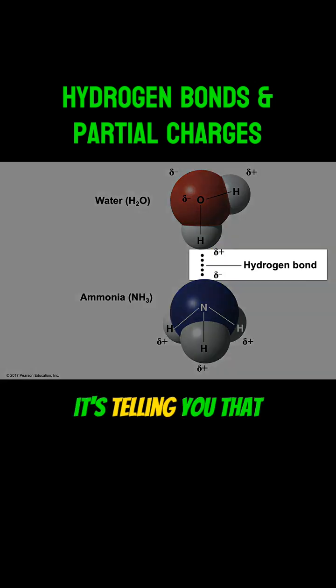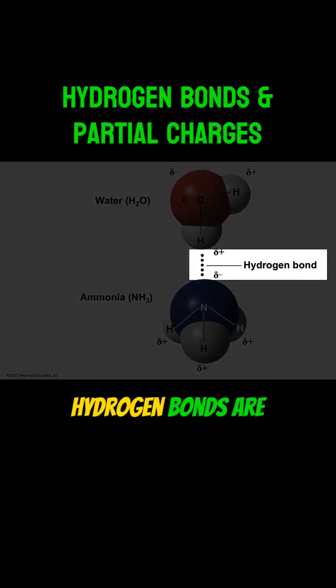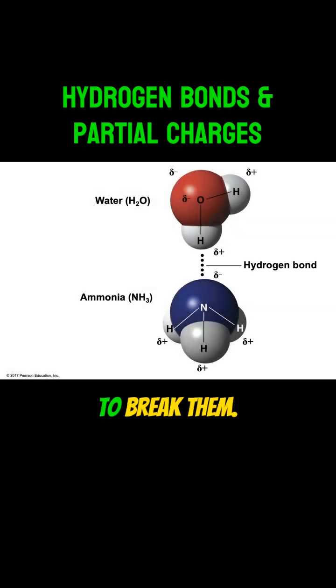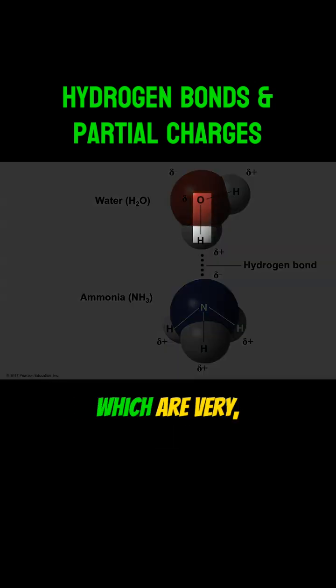Anytime you see dotted lines like this, it's telling you that this bond is a hydrogen bond. Hydrogen bonds are actually quite weak, only requiring some heat to break them, as opposed to covalent bonds which are very strong.